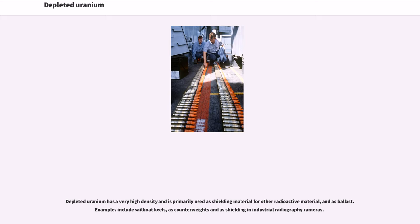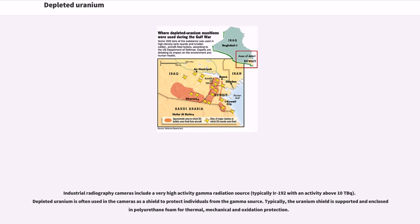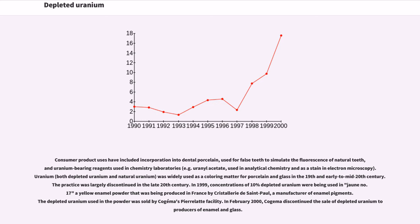Depleted uranium has a very high density and is primarily used as shielding material for other radioactive material and as ballast — examples include sailboat keels, counterweights, and shielding in industrial radiography cameras. Industrial radiography cameras include a very high activity gamma radiation source, typically iridium-192 with an activity above 10 TBq. Depleted uranium is often used in these cameras as a shield to protect individuals from the gamma source, supported in enclosed dense polyurethane foam for thermal, mechanical, and oxidation protection. Consumer product uses have included incorporation into dental porcelain to simulate the fluorescence of natural teeth, and uranium-bearing reagents such as uranyl acetate used in analytical chemistry and as a stain in electron microscopy.